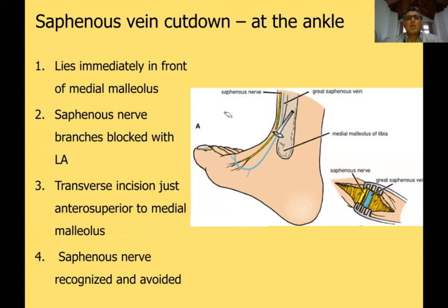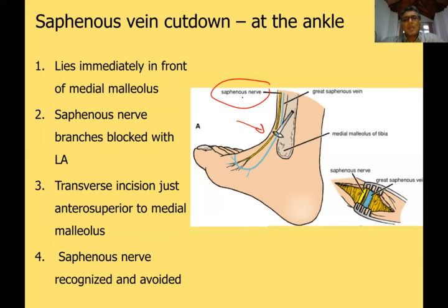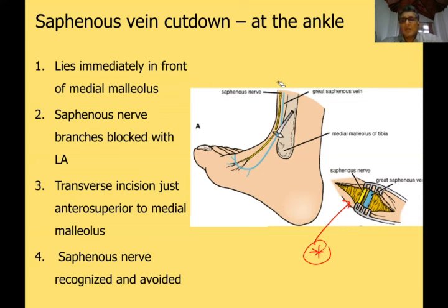For the saphenous vein cutdown, you give local anesthesia to block the branches of the saphenous nerve, which lies in front of the great saphenous vein. You make a cut, open up, and identify the saphenous nerve lying in front of the great saphenous vein — this relationship is easy to test in MCQs. You then protect the nerve, identify the vein, and insert a needle/cannula to administer IV fluids or blood.